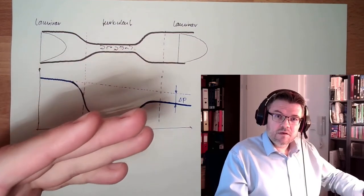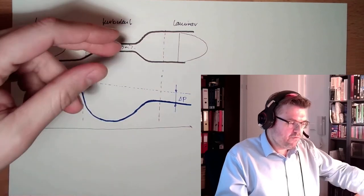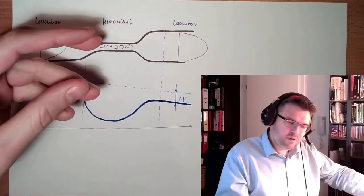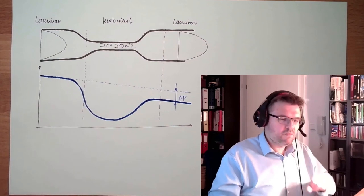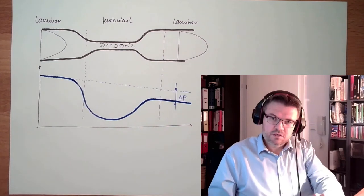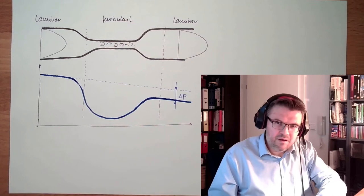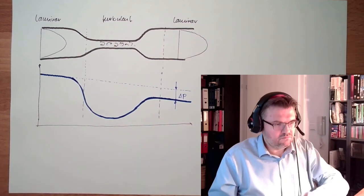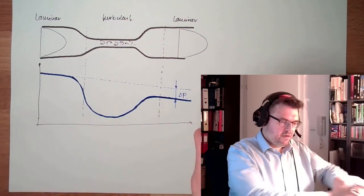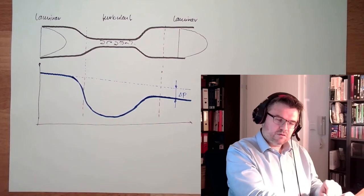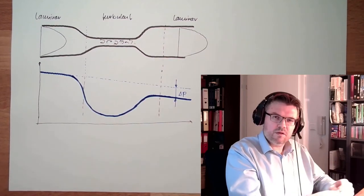We are losing energy at the throttle point. Where does this energy go? Heat. Really — if you have an orifice or a throttle point in your system and you touch it, the throttle point is warm, you can feel it. The pipes to the left and right are cold, and in the middle where the throttle point is — warm.